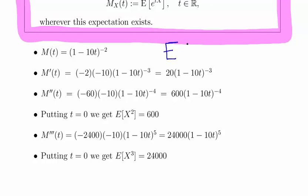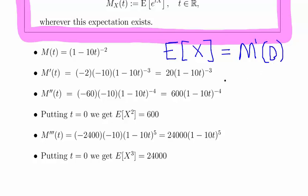The key property here is that E[X] is the first derivative of the moment generating function evaluated at t = 0. Likewise, E[X²] is the second derivative — m double prime evaluated at 0. That's essentially what we need to do.